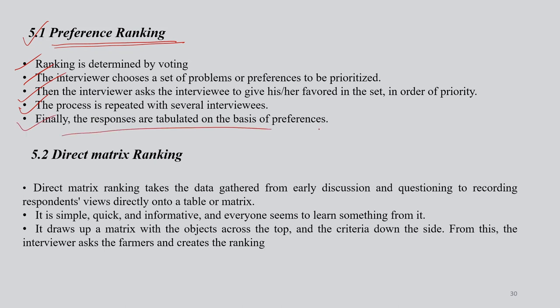The process is repeated with several interviewees to cross-check that the prioritized order of issues to be addressed is correct. Finally, the responses are tabulated on the basis of the preferences. This allows policy makers and those who will facilitate implementation of certain programs and solutions to act on the findings. If the preferences are correct, this ranking will lead to a better development paradigm and a better way of managing natural resources or any resources available within a geographical unit.